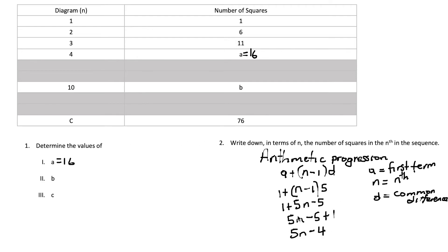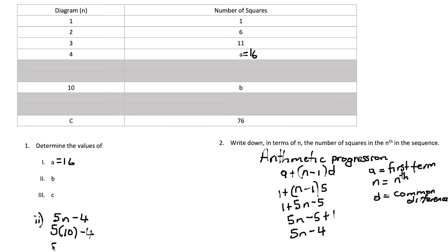We can now use the rule of the sequence to answer the rest of the questions. For the 10th diagram, we substitute n = 10: 5 times 10 is 50, minus 4 equals 46. That is our answer for b.